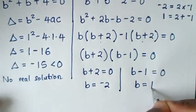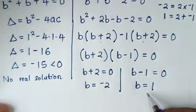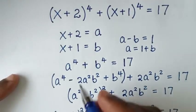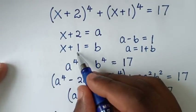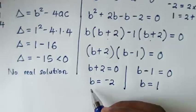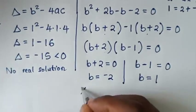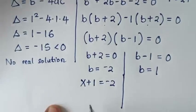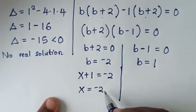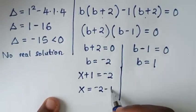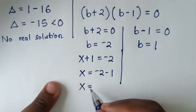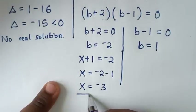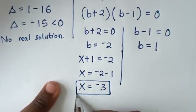But we are supposed to find the values of x, not b. From our substitution, b = x+1. So x+1 = -2 gives x = -2 - 1 = -3. So this is the first value of x, which is x = -3.